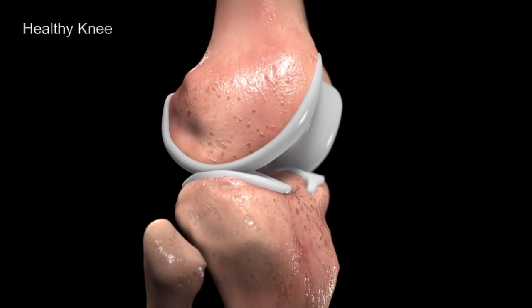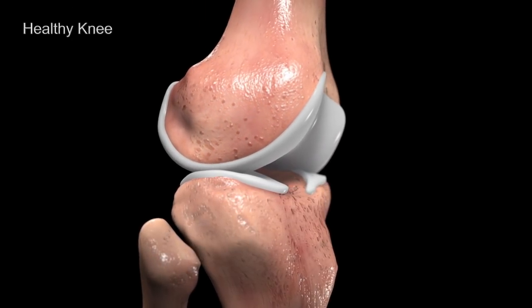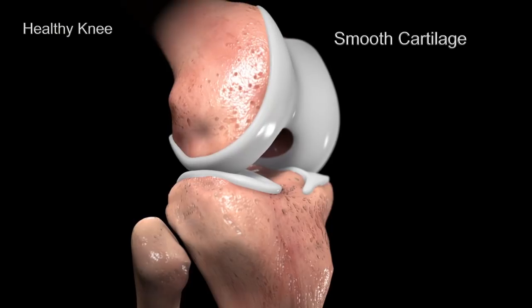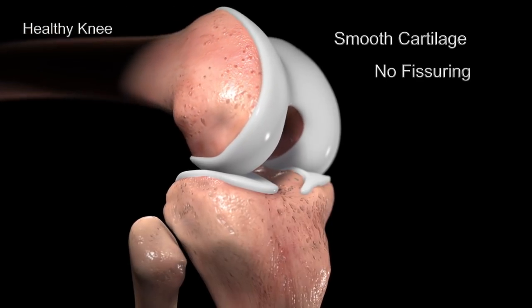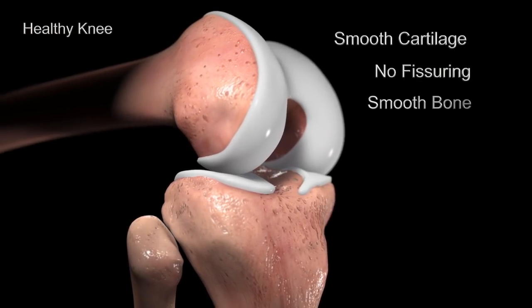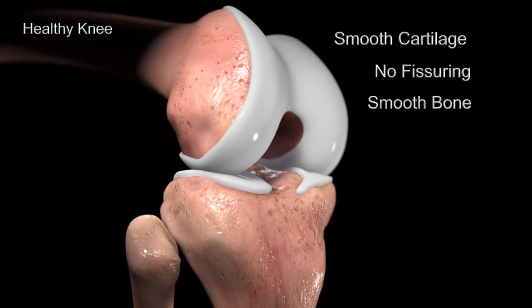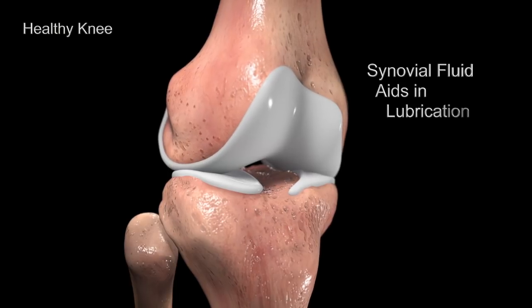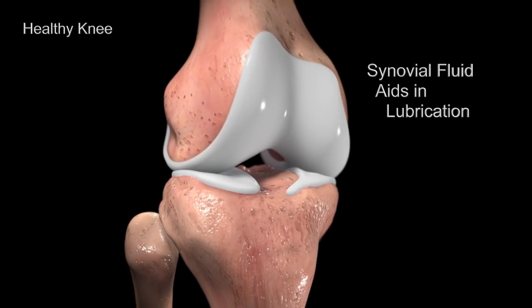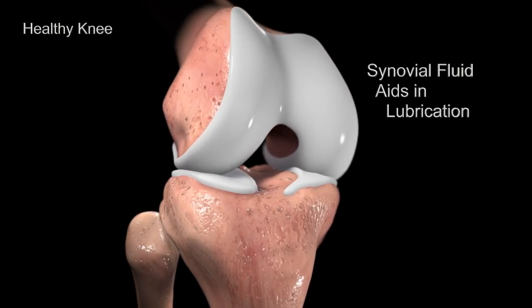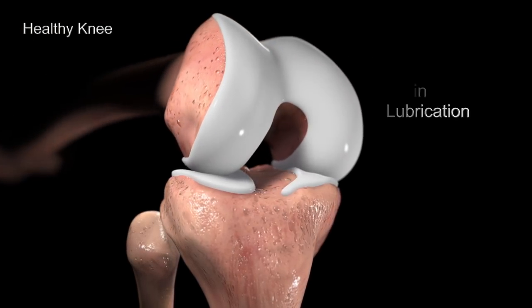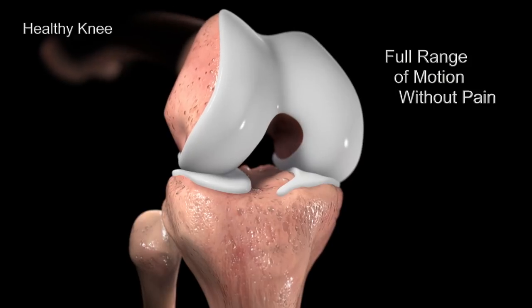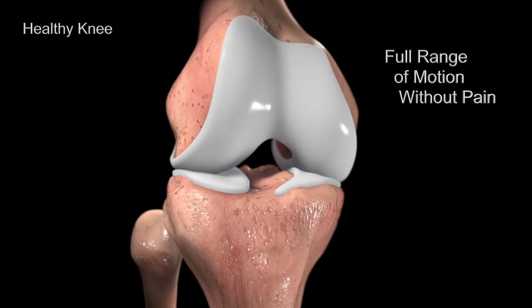In a healthy knee, the articular cartilage is smooth, without fissuring, and the bone is smooth. The synovial fluid is viscous, aiding in lubrication. The knee can move through its range of motion without pain.